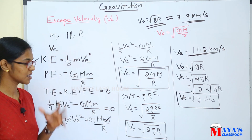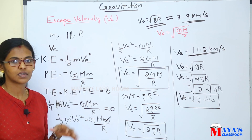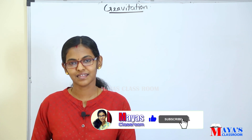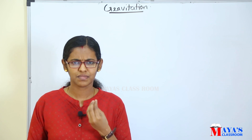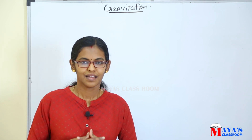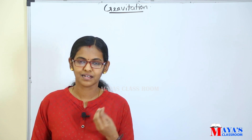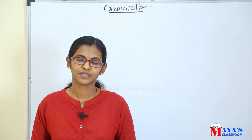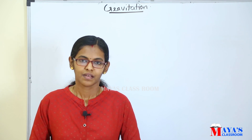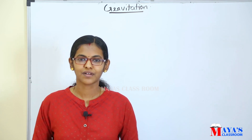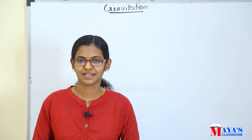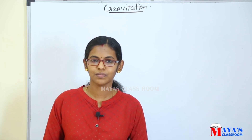In this class, we discussed escape velocity, its simple derivation, the formula Ve equals root of 2gR, and its value of 11.2 km per second for earth. Please share this with others. We will see the next topic in the next class. Thank you.